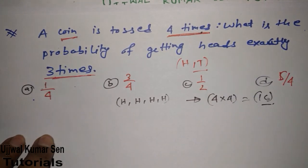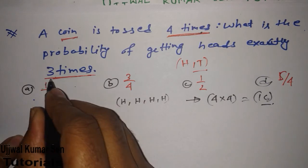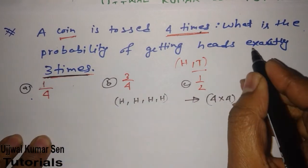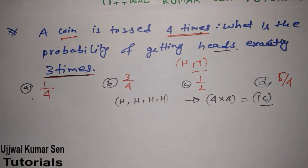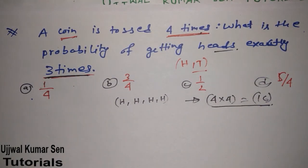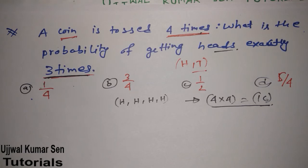The total sample space would be 2×2×2×2 = 16. But the question asks for exactly three heads. We have to find out how many outcomes among the 16 give exactly three heads. We don't need to write all 16; we just use our brain to count how many times we can get exactly three heads.